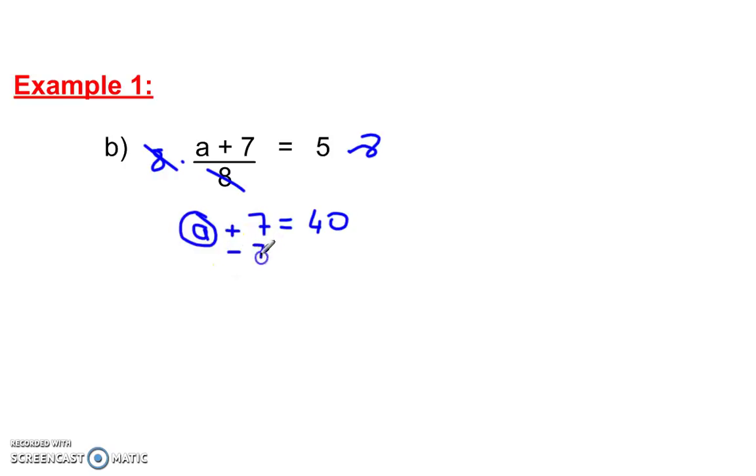That's what we're solving for. So, we undo this operation. It's positive 7. So, we subtract 7. a is equal to 33.